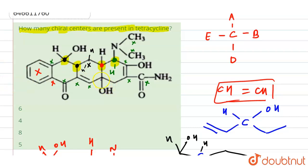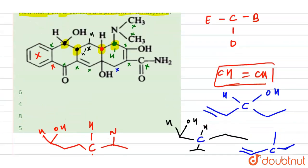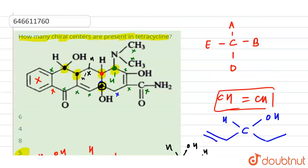The next carbon is not chiral because two hydrogens would be present there. But for this last carbon: here we have OH, one hydrogen, on this side the chain is going on with different substituents, and on this side we have a double bond while on the other side a single bond chain is going on. So this is also our chiral carbon. In total, we have five chiral carbons — the answer is five.